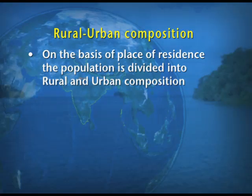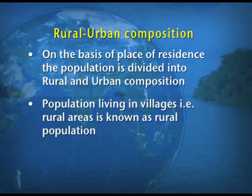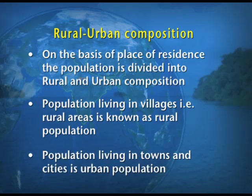First we take up the rural-urban composition. On the basis of the place of residence, the population is divided into two parts: rural and urban. The population living in villages is known as rural population, and the population living in towns and cities is known as urban population.